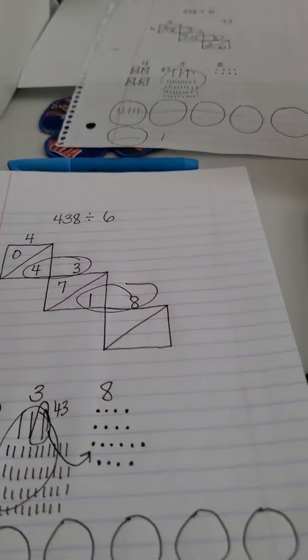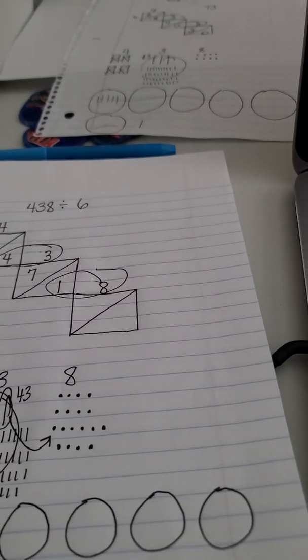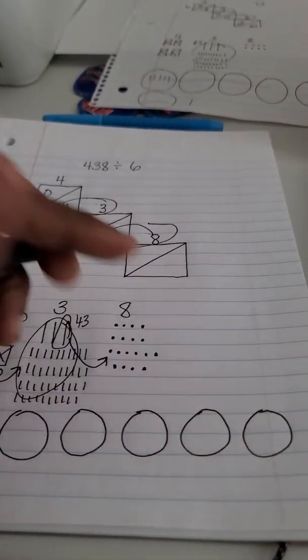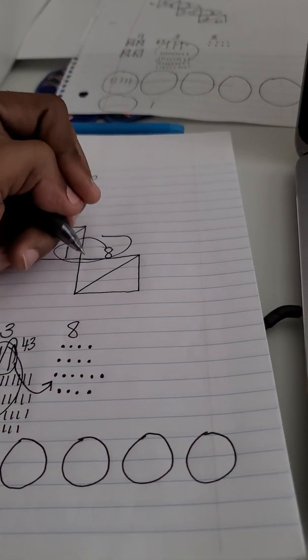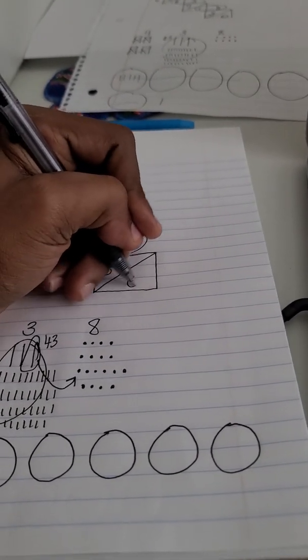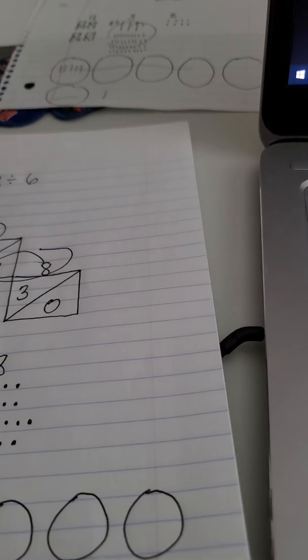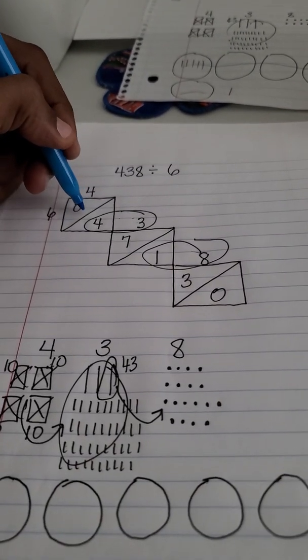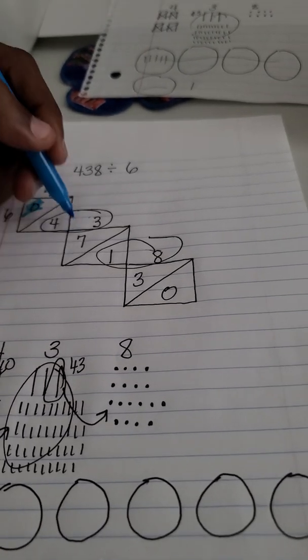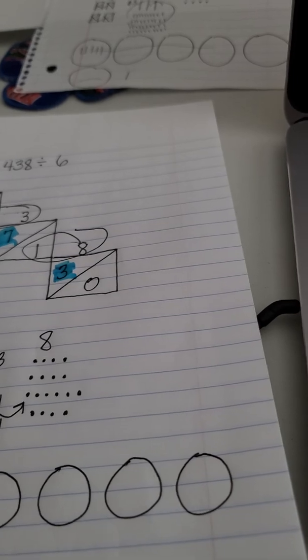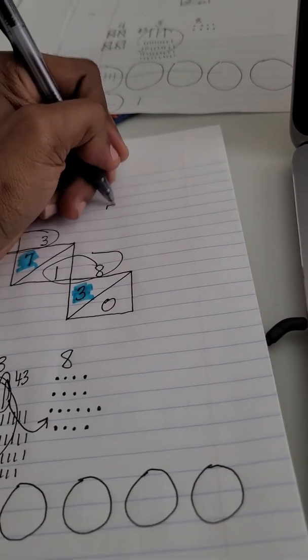Now take those 18 ones and put them in those groups equally. That will give me three in each group with zero left over. Your answer will be the numbers at the top: 0, 7, 3. So the answer is 73.